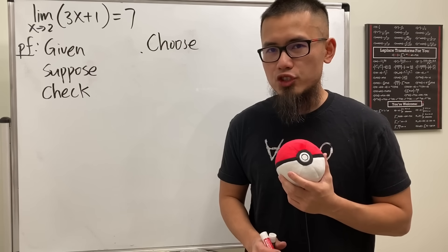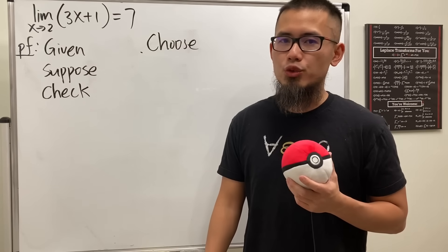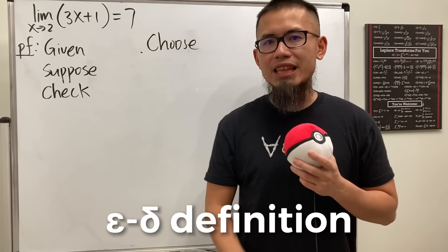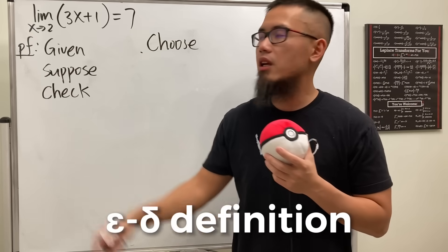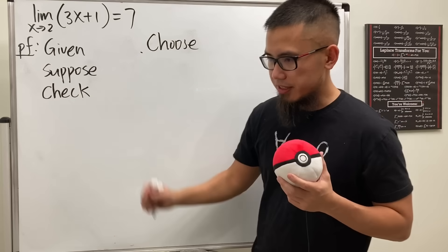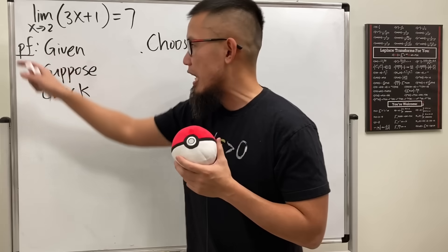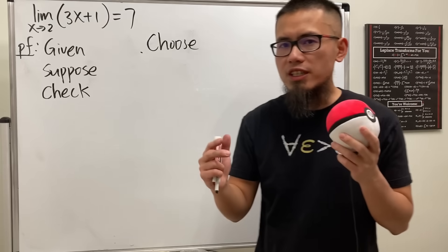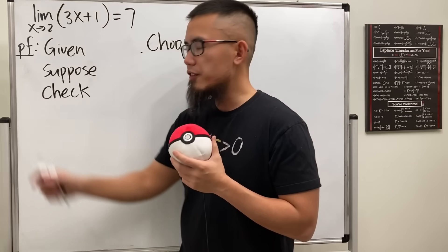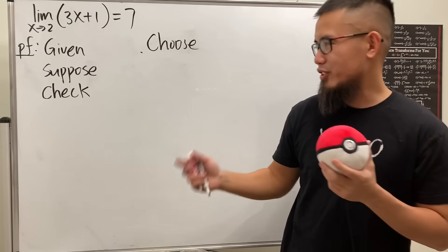This video can possibly save your GPA if you're taking Calculus 1 at a university — how to prove limits with the epsilon-delta definition. The first example is a linear situation. I recommend you always write down 'PF' because your professor will be really happy when he or she sees it, which stands for proof — trust me on that.